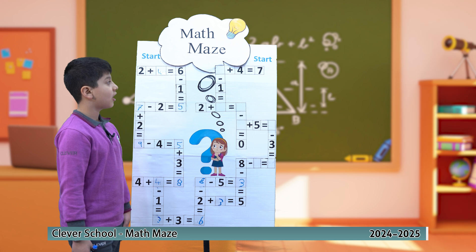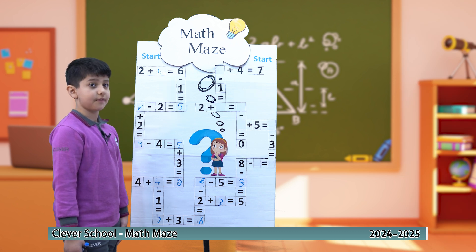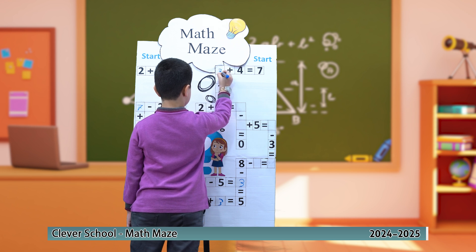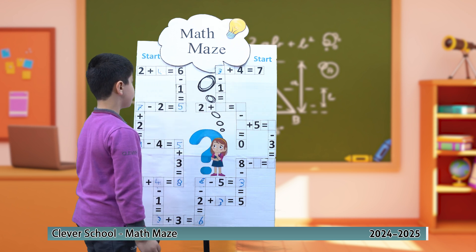Which number plus 4 equals 7? 3. 3 minus 1 equals 2.